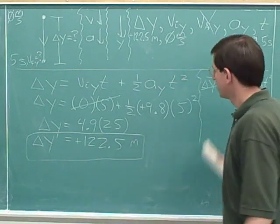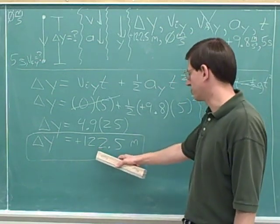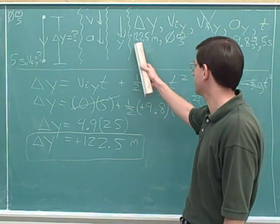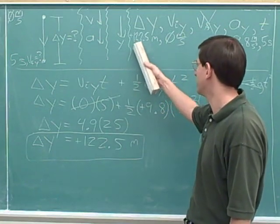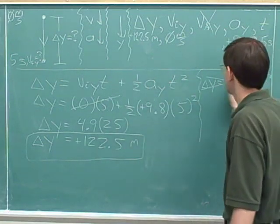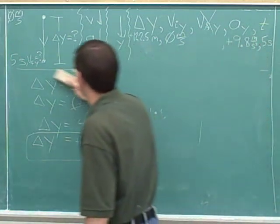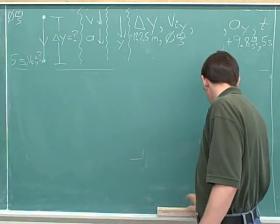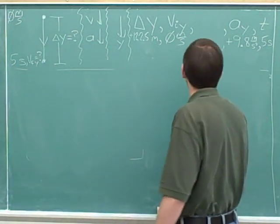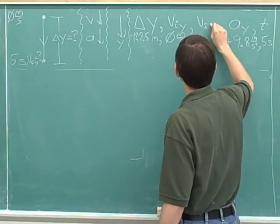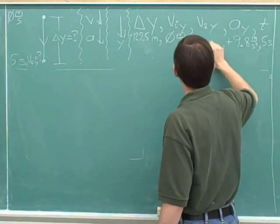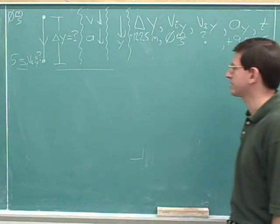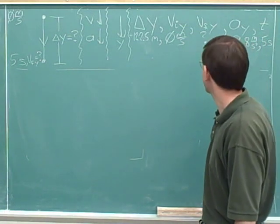We can erase all this work. Notice that the one thing we want to keep is we should write down that we've already figured out this displacement — it's positive 122.5 meters. Now we're not going to ignore the vertical velocity anymore. We want to know what that final vertical velocity is: the velocity after 5 seconds.